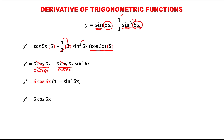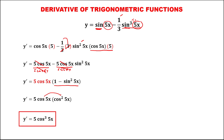Using the identity, this one minus sine squared five x is equal to cosine squared five x. So we have five cosine five x times cosine squared five x — adding the exponents — therefore the derivative is equal to five cosine to the power three, five x.